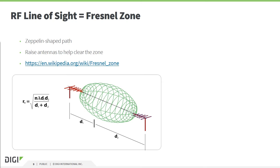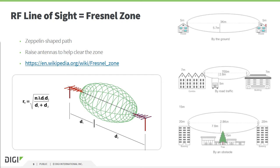The size of the Fresnel zone depends on the frequency and the distance between the transmitter and receiver. If obstacles are inside the Fresnel zone, your link quality will be lower than 100%. If the antennas are on or close to the ground, half of the Fresnel zone is in the ground, reducing link quality a lot. To increase range, try to clear the Fresnel zone as much as possible — for example, by raising the antennas as high as possible. The range documented in the datasheet is measured with a Fresnel zone that is completely free.